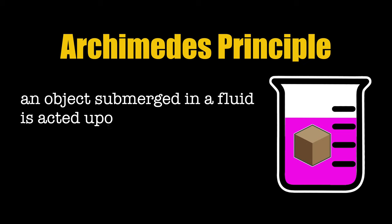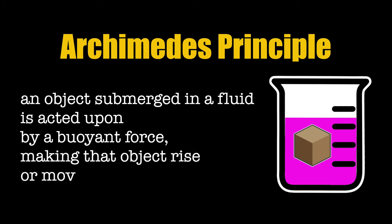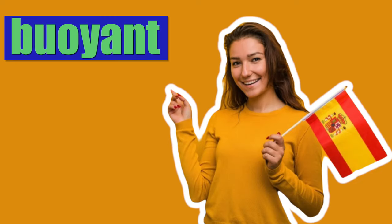Archimedes' principle states that an object submerged in a fluid is acted upon by a buoyant force, making that object rise or move upward. The word buoyant comes from the Spanish word boyar, meaning to float.